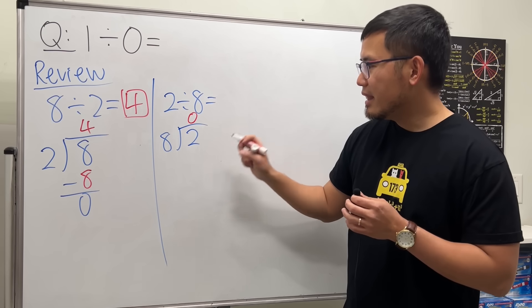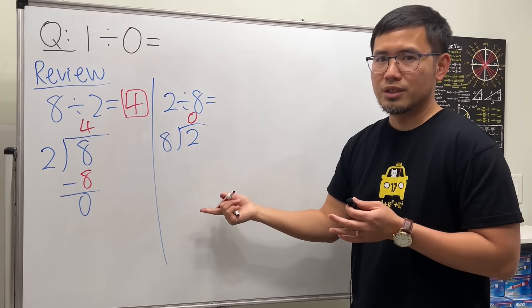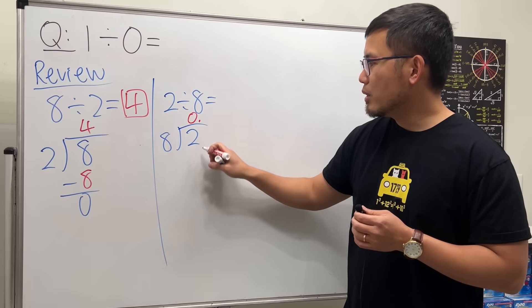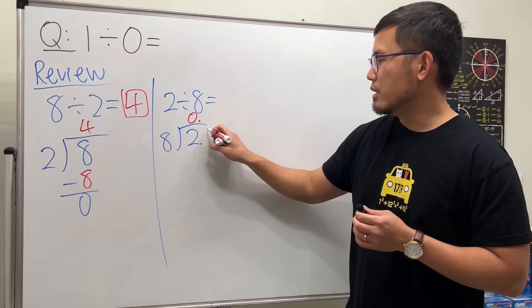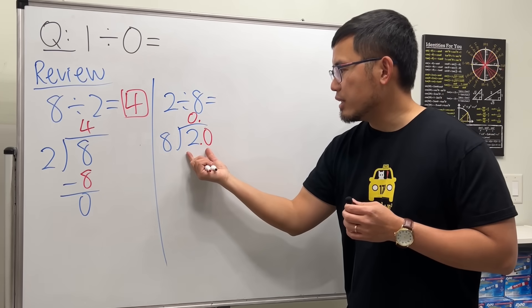And then go ahead, you want to continue because this is just a 2. We didn't do anything with it. Put down a decimal, put down a decimal, and then you can put down a 0 here. And then you look at this as 8 and 20.